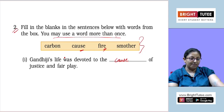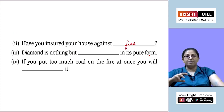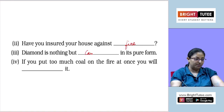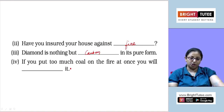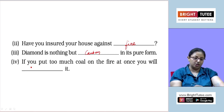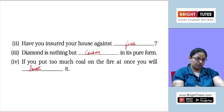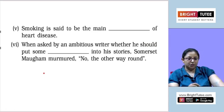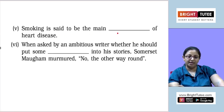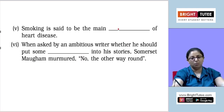Third: diamond is nothing but ___ in its pure form. Carbon — carbon in its pure form is diamond. Fourth: if you put too much coal on the fire at once, you will smother it. Fifth: smoking is said to be the main ___ of heart disease — main cause. If you smoke, it is the cause of heart disease.